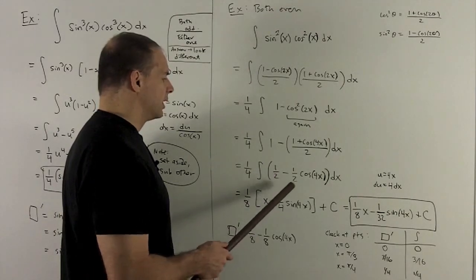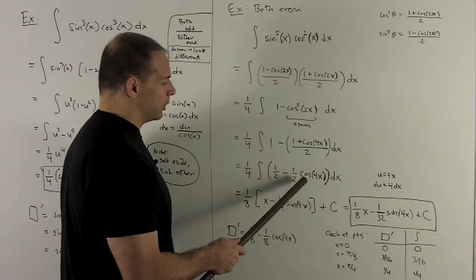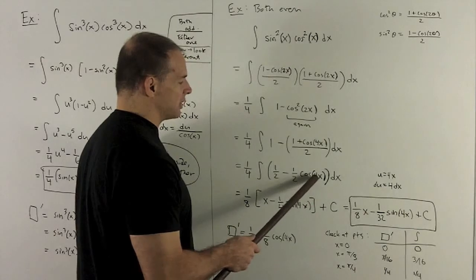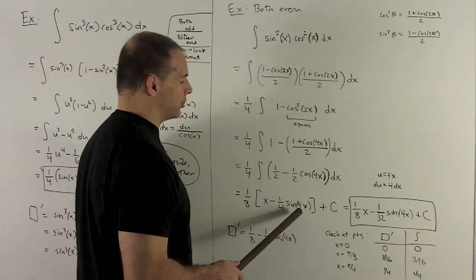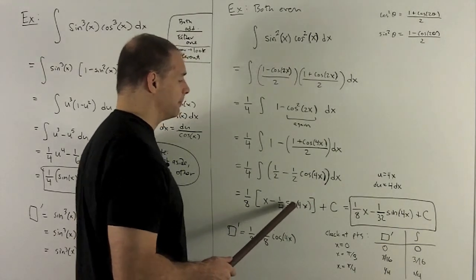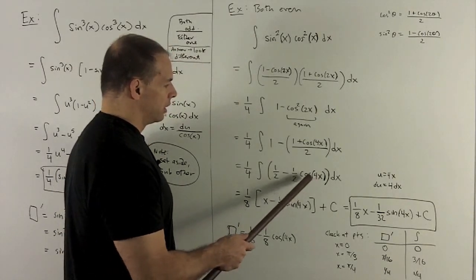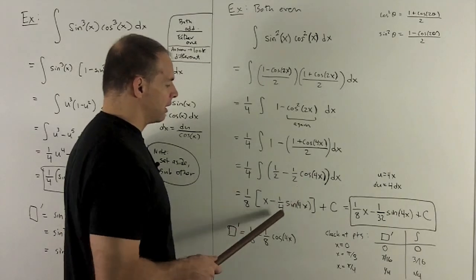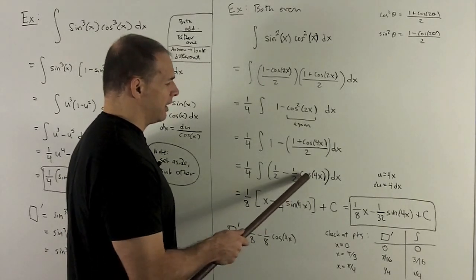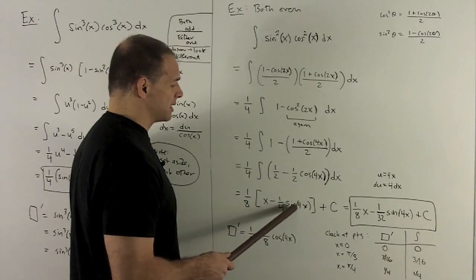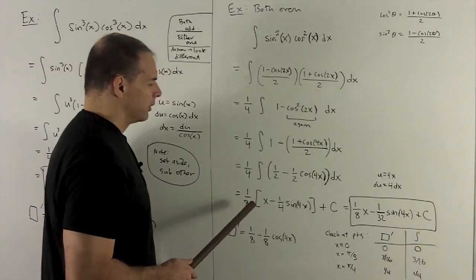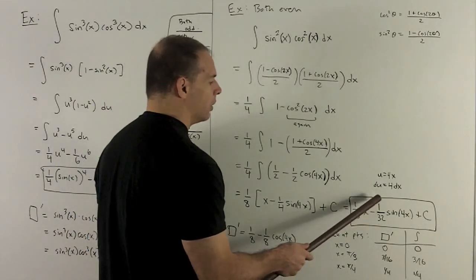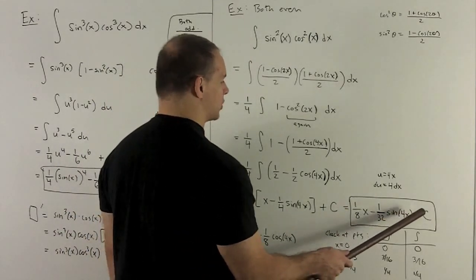For cosine 4x, what we can do is I'll let u be equal to 4x, du equals 4dx. And that effect is just to divide by 4 multiplied by the antiderivative of cosine, which is sine. So this will turn into, well this turns into a 1 because I factor it out. The 4 in here flips over to give me a 1 fourth. And then antiderivative of cosine is sine. So that's going to give me a sine 4x. If I push through the 1 eighth, we're going to wind up with a 1 eighth x minus 1 32nd sine 4x plus a constant.